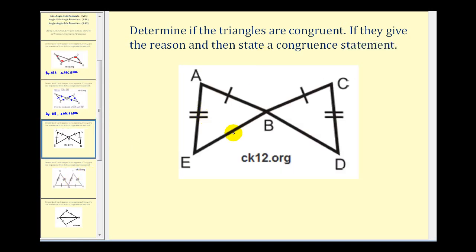Same question, different diagram. The only information we're given here is that segment AB is congruent to segment BC, and segment AE is congruent to segment CD. Now these two intersecting segments do form vertical angles, so we could conclude that angle ABE is congruent to angle CBD. But notice we have side-side-angle, which does not fit one of the four postulates. Therefore we cannot conclude that these are congruent triangles.